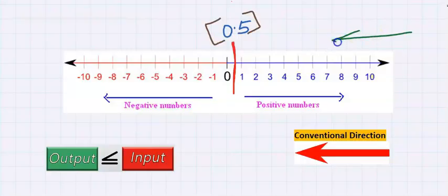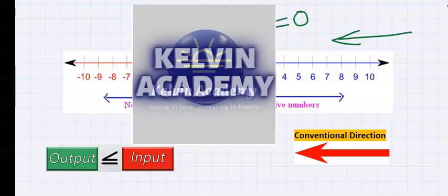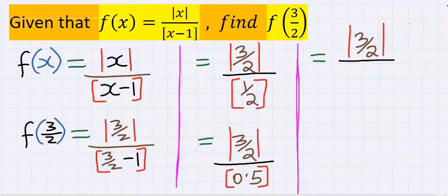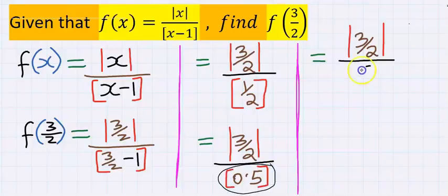Hence, the next integer towards this direction after 0.5 is 0. Hence, the greatest integer function of 0.5 is 0. That is, everything here is equal to 0. This means everything at the denominator is equal to 0.